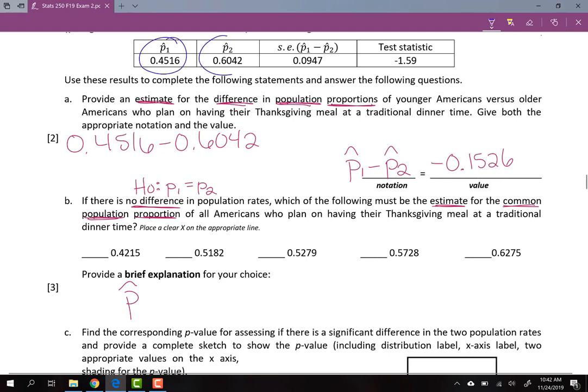This estimate has to be in between the two sample proportions. So that makes 0.4215 not a valid answer. Don't even look at it. That makes 0.6275 again, not even a valid answer. Don't look at it. It can't be any of those. It has to be in between.